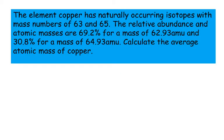The element copper has naturally occurring isotopes with mass numbers of 63 and 65. The relative abundance and atomic masses are 69.2% for a mass of 62.93 atomic mass units and 30.8% for a mass of 64.93 atomic mass units.